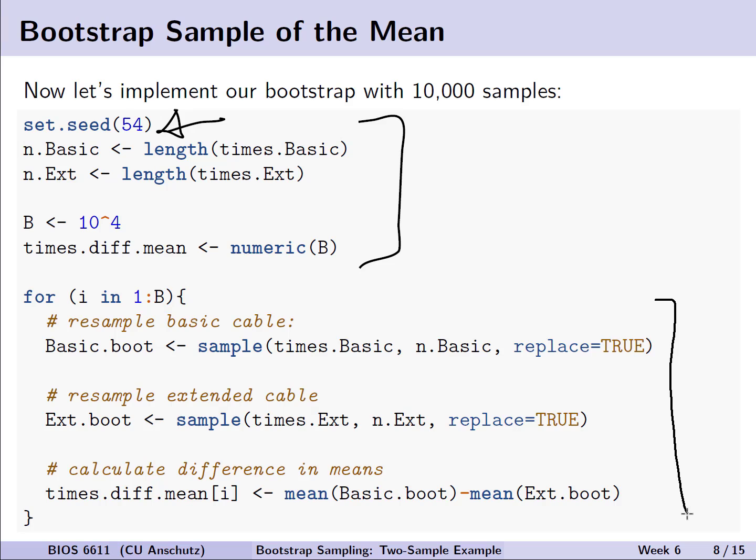What we see below is that same simple-looking for loop, but with just a little tweak now to introduce the fact that we have two samples to resample from. We see here we will first resample from the basic group and store the results in basic.boot before resampling from the extended cable times below. Again, note here we are resampling within basic only from the times measured in the basic group 10 times with replacement.